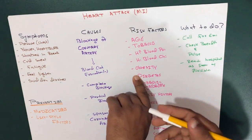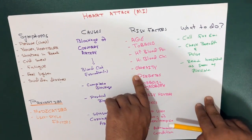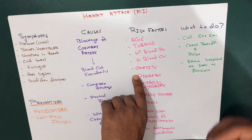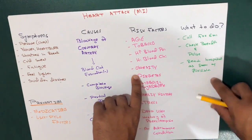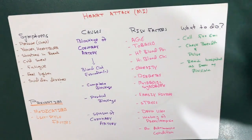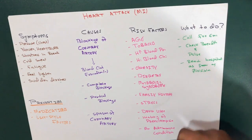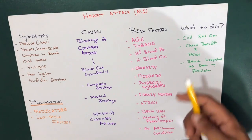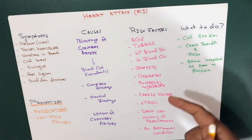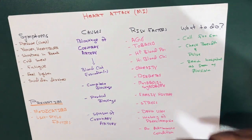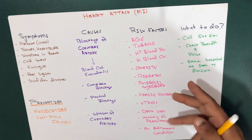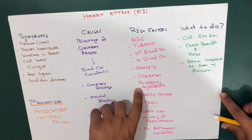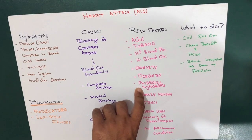Obesity is associated with high blood cholesterol and high triglyceride levels, leading to excess body fat that can contribute to heart attack. In the case of diabetes, if your body is not producing enough insulin or not responding to it properly, your blood sugar rises, increasing your risk of heart attack.